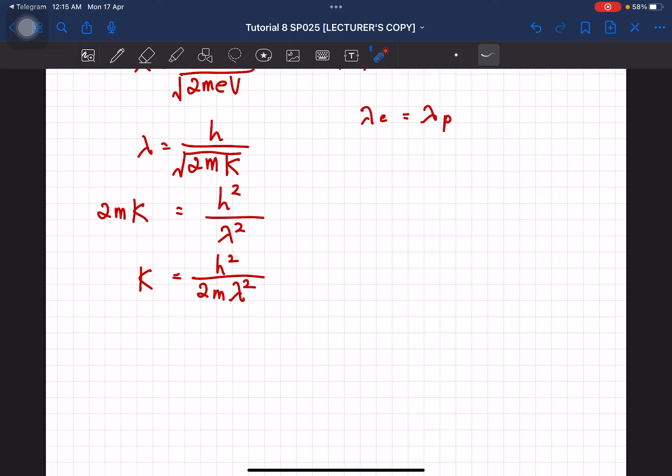So since lambda is going to be constant, h is also constant, we are looking at the mass. Okay, so mass of the particle. So apa yang kita boleh tengok disini is, if the mass of the particle is less, the kinetic energy will be greater. So sekarang ni kita tengok lah.